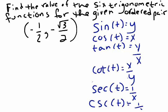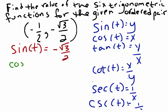First we'll find sine of t. Since sine of t equals y, and our y-coordinate is negative square root of 3 over 2, we can say that sine of t equals negative square root of 3 over 2. Next we'll find cosine of t. Cosine of t equals x, which means in this case cosine of t equals negative 1 half.